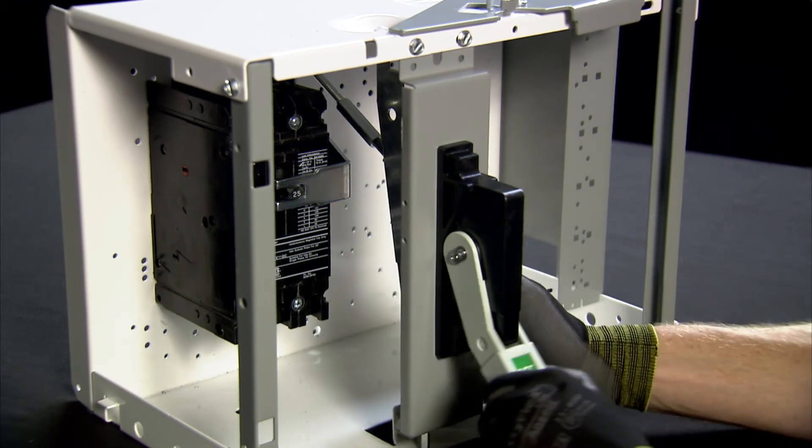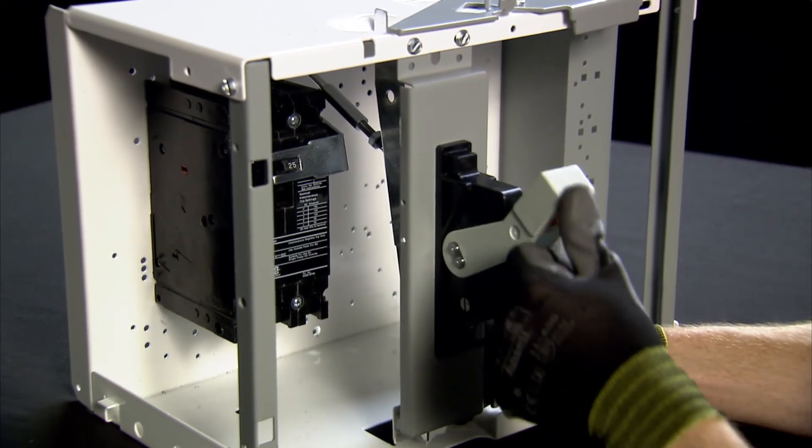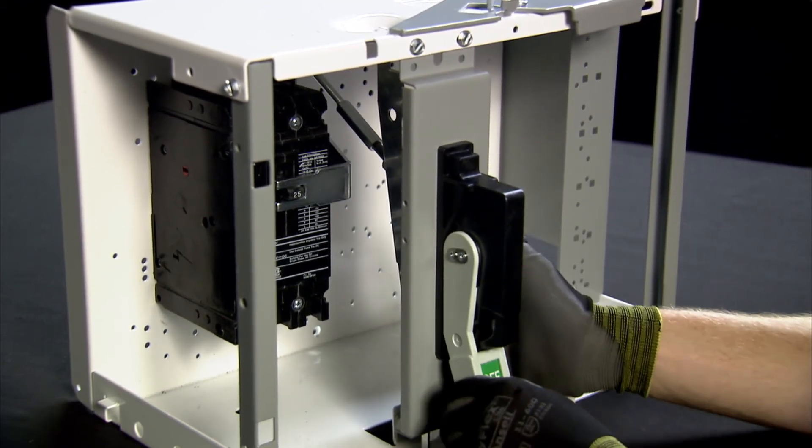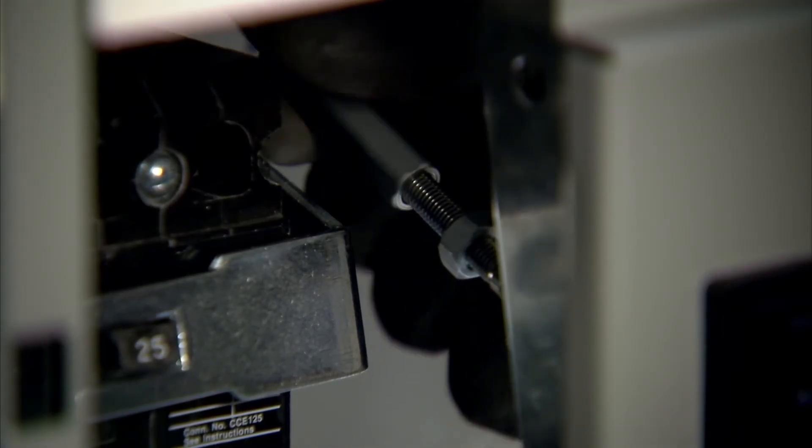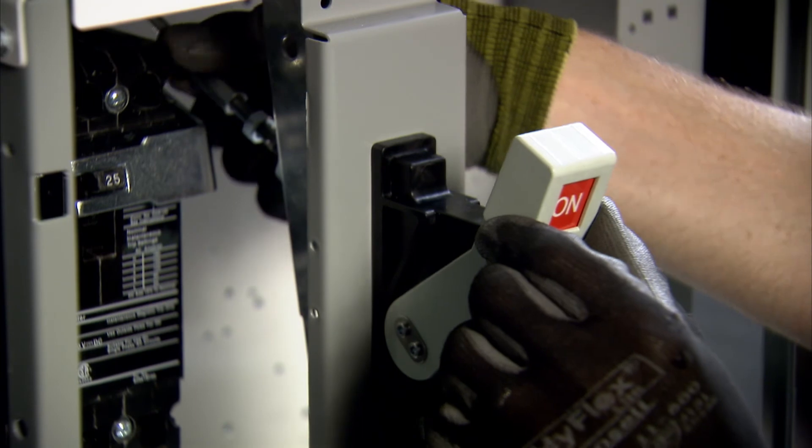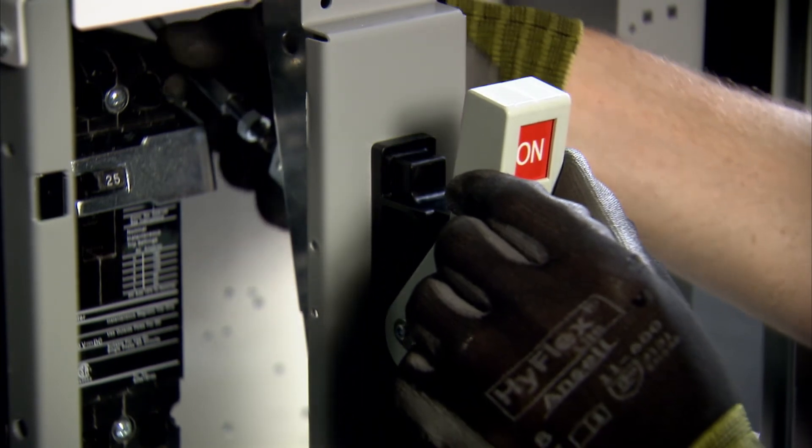If the handle will not move into the on position, the length of the linkage rod is too long and must be shortened. Rotate the turnbuckle counterclockwise to shorten the rod and move the handle up towards the on position.